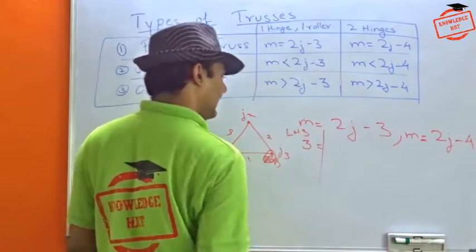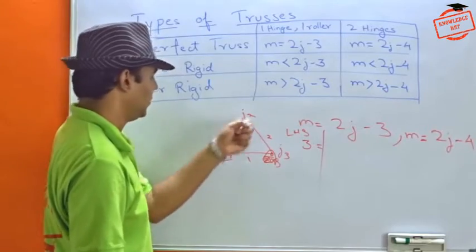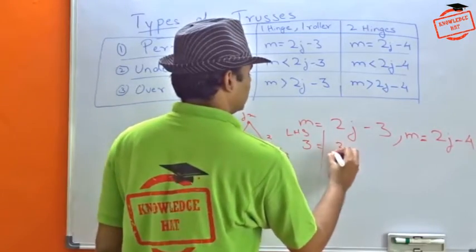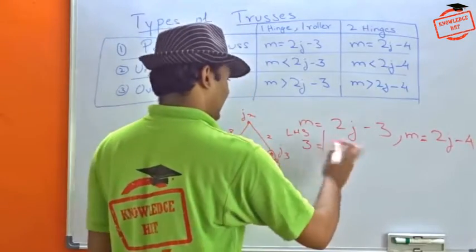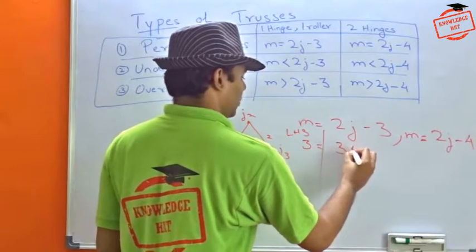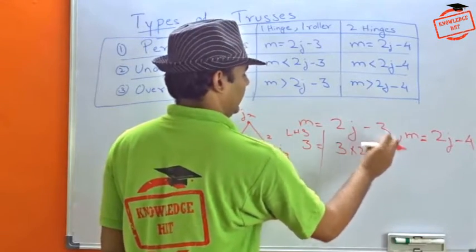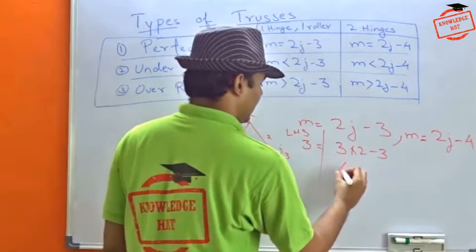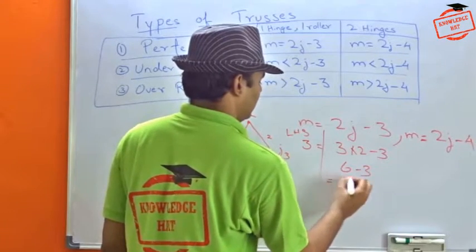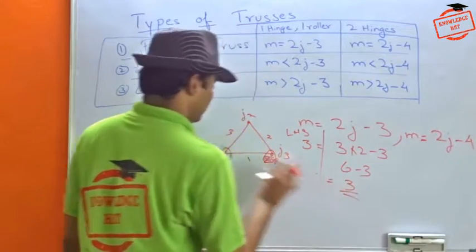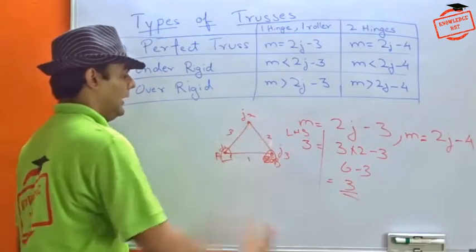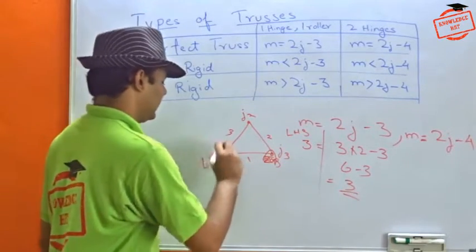So we have our left-hand side sorted. For the right-hand side, we have one, two, and three joints, into two, minus three, which is by formula. So we get six minus three equals three. So this system is a perfectly rigid truss.